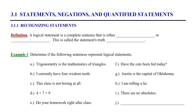Section 3.1 deals with statements, negations, and quantified statements. We're going to start at the beginning for our study on logic in 3.1.1 — recognizing statements. Definition: a logical statement is a complete sentence that is either true or false. A statement in logic is a little different than how we define a sentence in English. A sentence simply expresses a complete thought — it has a subject and a predicate. A logical statement has a truth value associated with it; it is either true or false. This is called the statement's truth value.